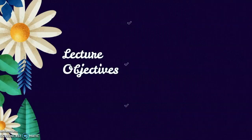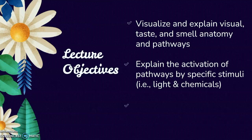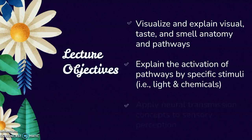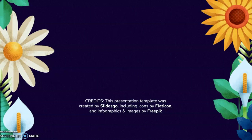That's it, everyone. At the end of this lecture, you should be able to visualize and explain visual, taste, and smell anatomy and pathways, explain the activation of pathways by specific stimuli — for example, light and chemicals — and apply neural transmission concepts to sensory perceptions. Catch you on the next video lecture, everyone. Take care.